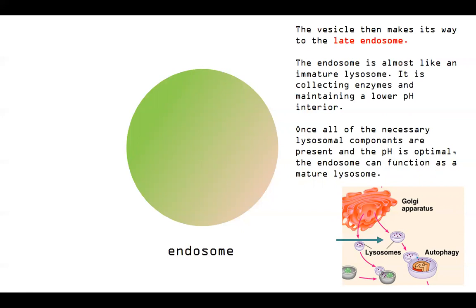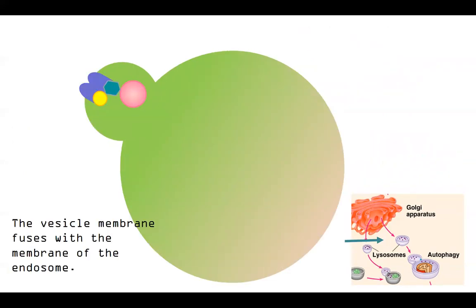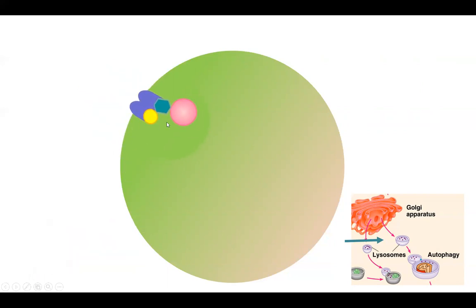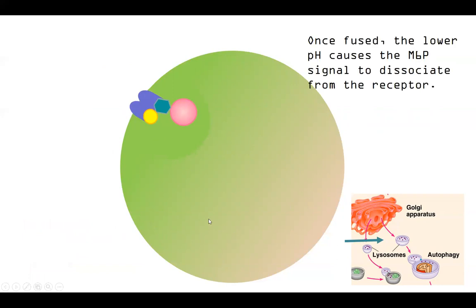And this also kind of ties back to the advantages of compartmentalization. Really nice to have that compartment that's going to hold those digestive enzymes. Once all the necessary lysosomal components are present, and pH is optimal, the endosome can function as a mature lysosome. So here comes our acid hydrolase. The vesicle membrane, which was holding our enzyme, will fuse with the membrane of the endosome. So we'll just fuse. They're both membrane. And once we're inside, the lower pH inside this endosome is going to cause our acid hydrolase to dissociate, to kind of break away from the receptor. So now we can just float freely within this endosome or lysosome.